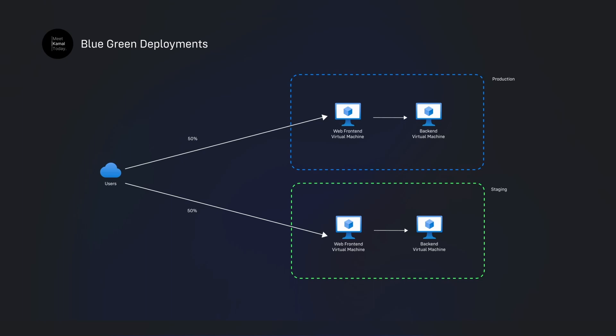Usually the deployment looks something like this. You have two environments: production and staging. You want some of your users to access the old version of your software and a minimal set to access the staging environment. Here I have defined percentages — 50 and 50% — but this doesn't have to be that. There should be a way for you to control this percentage, and one of the ways is using Azure Traffic Manager.